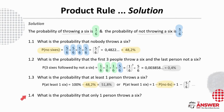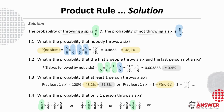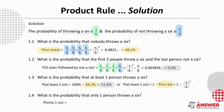Finally, the probability that only one person throws a 6 is the product of the probabilities where one person throws a 6 and the other three don't. There are four different ways this can happen: only the first person, only the second, only the third, or only the fourth. So the probability of only one person throwing a 6 is 4 times this, which is 38.6%.